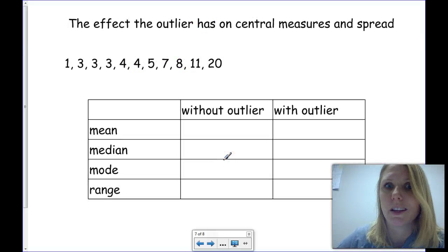So, what exactly does an outlier do to our data? Well, let's look at it without the outlier, and with the outlier, and measuring the mean, median, mode, and range.